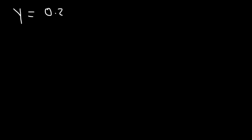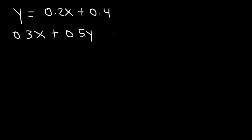Now what about this one? Let's say that y is equal to 0.2x plus 0.4, and also 0.3x plus 0.5y equals 3.4. What method should we use — elimination or substitution? Whenever you have y by itself in one of the two equations, substitution is the preferred method. The same is true if you have x by itself.